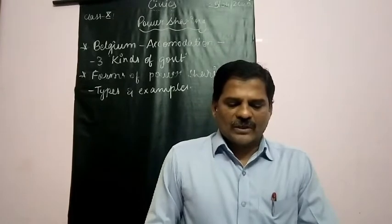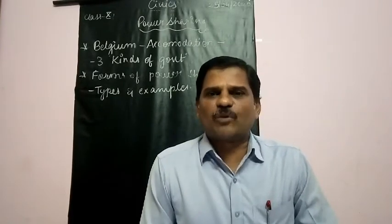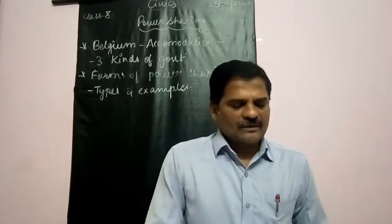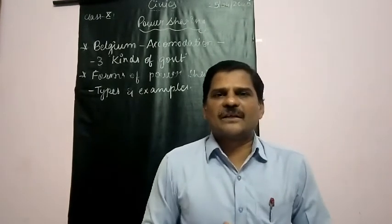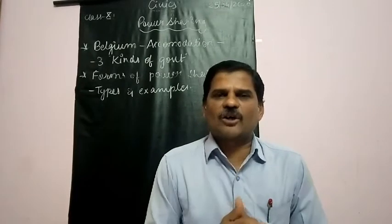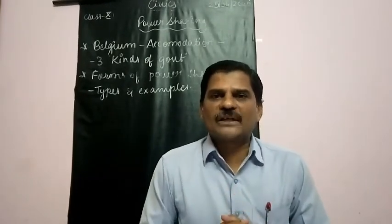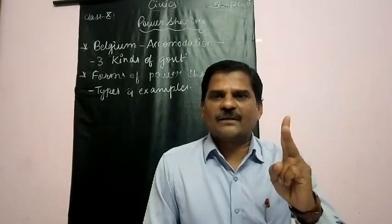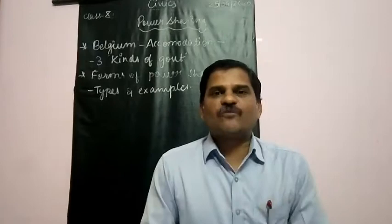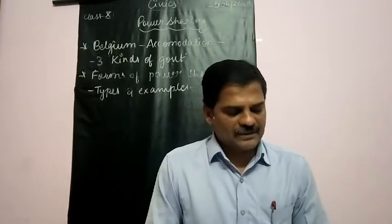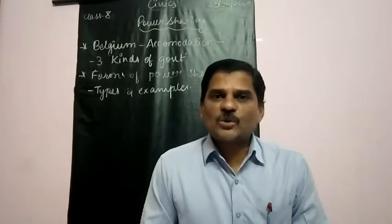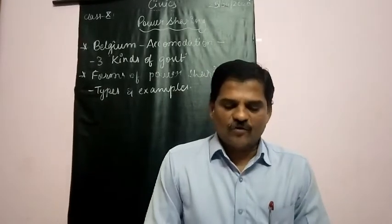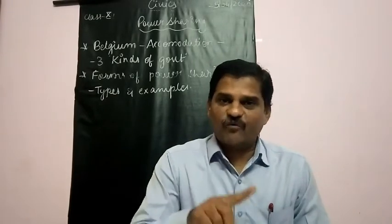In the Belgian model of government there are three types of governments: one is central government, state government, and community government. The Constitution prescribes that the number of Dutch-speaking and French-speaking ministers shall be equal in the central government.